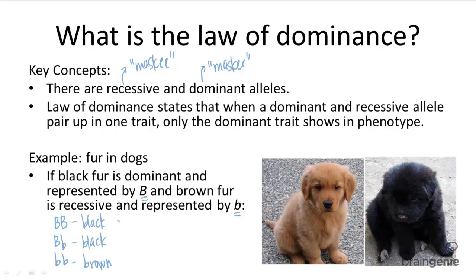Notice how both BB and Bb code for the same phenotype — they both code for black fur. So that means if you were to come across an individual showing the dominant trait, such as a black fur dog, you do not know their genotype, because there are two possibilities. Whereas if you were to come across an individual showing a recessive trait, such as the brown fur dog, you automatically know their genotype, because there is only one possibility. Recessive traits will only show when there are two of them in the genotype.